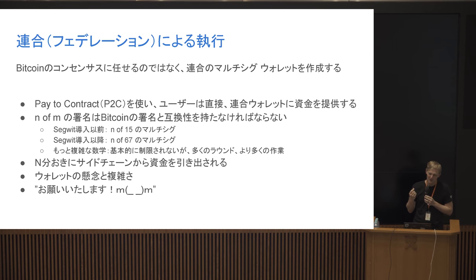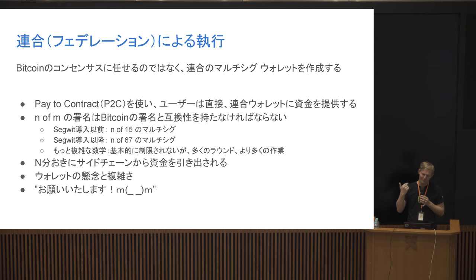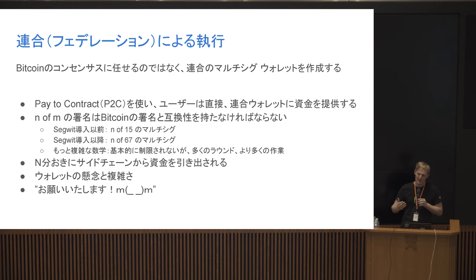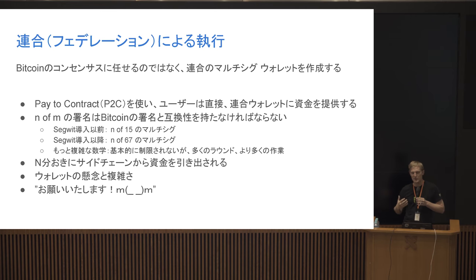Post-SegWit, it's actually bigger. Even following normal standardness rules you can get up to N-of-67, so a federation size of 67. With fancier math, you can do essentially unbounded federation sizes using ECDSA pairing-based cryptography tricks, getting it down to where it looks like one signature — basically doing M-of-N Schnorr but with ECDSA. It requires more rounds of back-and-forth communication, increasing latency. Every N minutes, you do a batch withdrawal from the sidechain. This multi-sig wallet sees users requesting pegouts from the sidechain, agrees on which are valid, and pays them out. This brings wallet concerns: UTXO management, fee estimation, since you're not a miner.